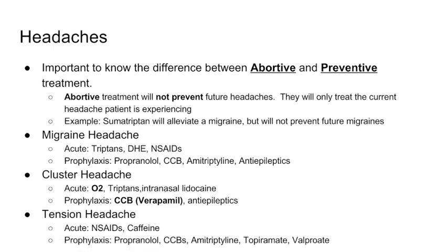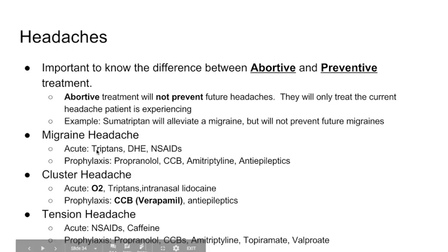To summarize: abortive treatment will not prevent future headaches — it only treats the current headache. Preventative treatment is to prevent future headaches. For migraine headache, acutely use triptans or dihydroergotamine and NSAIDs. For prophylaxis: propranolol, calcium channel blockers like verapamil, amitriptyline, and anti-epileptics.